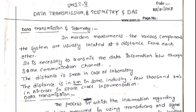It is necessary to transmit data and information through some communication channel. In a laboratory, all equipment is located close together and the distance is very small. However, in industries, data transmission must occur over kilometers. In the case of aircrafts or airplanes, data transmission happens between thousands of kilometers.